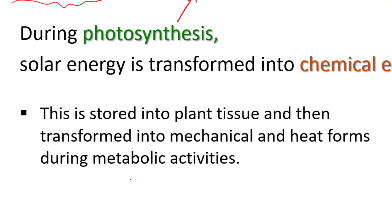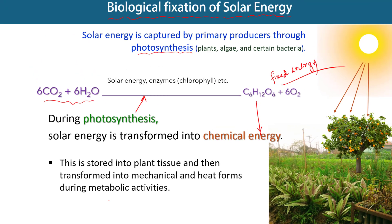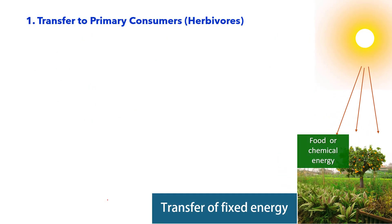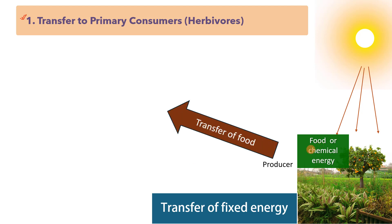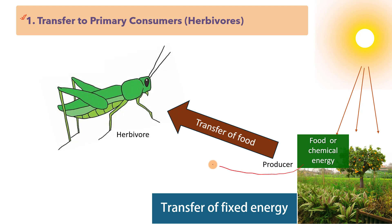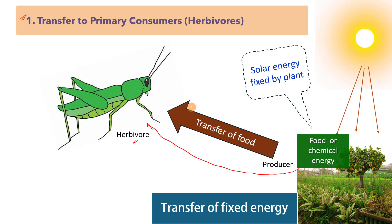Some autotrophs utilize energy released from oxidation processes for the synthesis of organic food. In this illustration, you can see how food is transferred from the primary producer to the primary consumer or herbivore. Food is the fixed energy of photosynthesis. Herbivores feed on plants and obtain energy from the stored chemical energy within the plants. They convert the plant material into their own biomass, storing some of the energy that was initially captured from the sun.